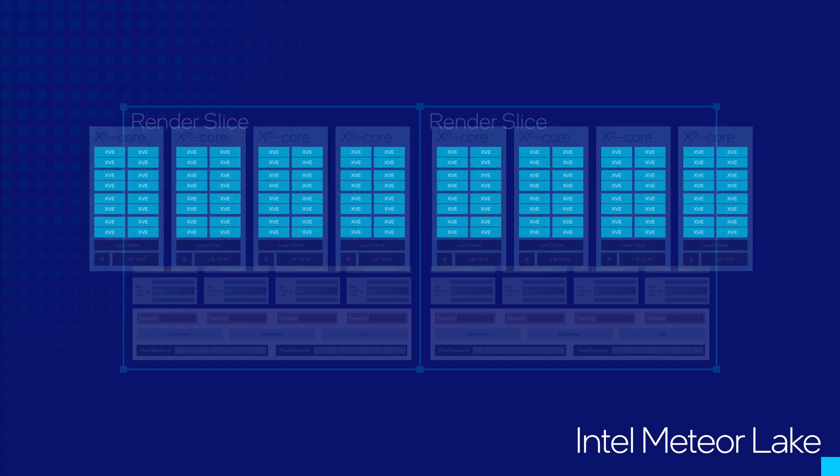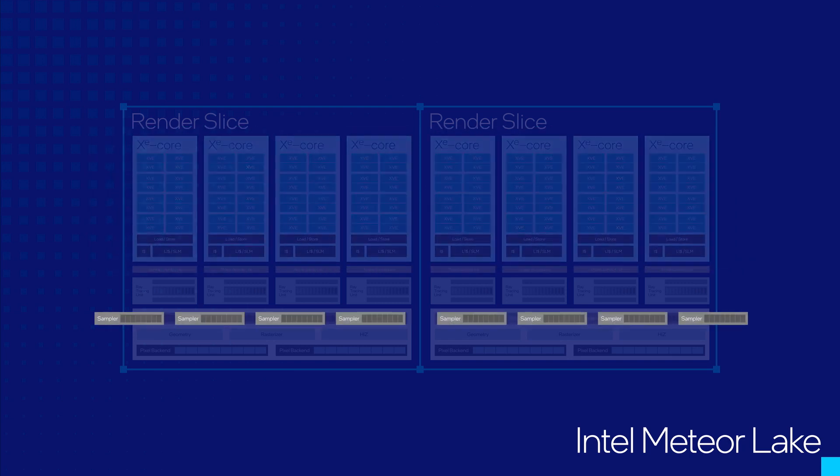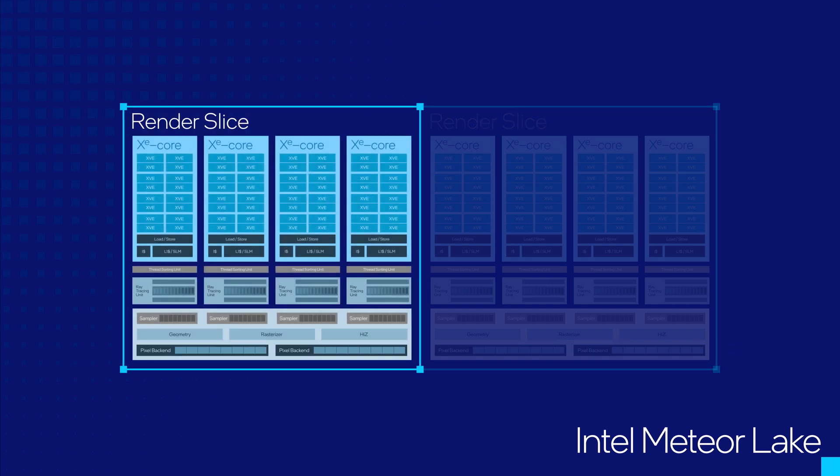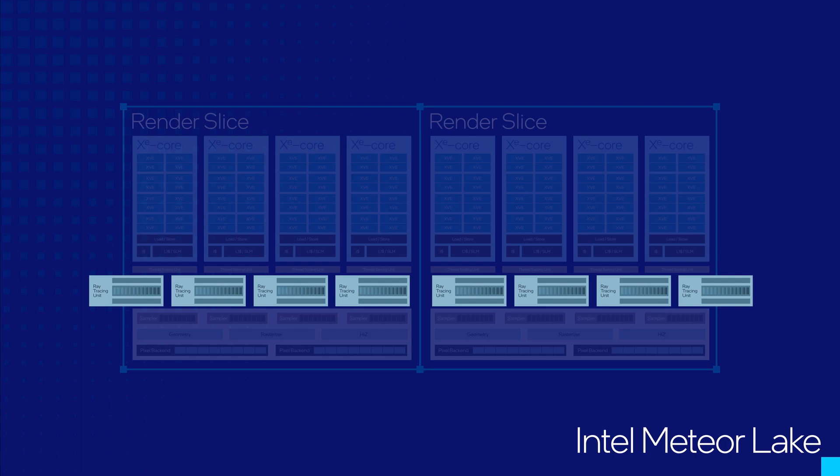It's eight Xe-Cores, 128 vector engines, eight samplers with 64 textiles per clock, four pixel backends with 32 pixels per clock, two render slices with two times the geometry throughput, and eight ray tracing units.